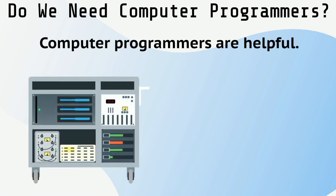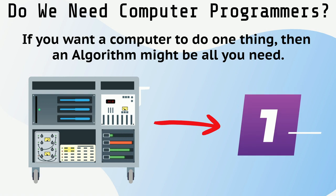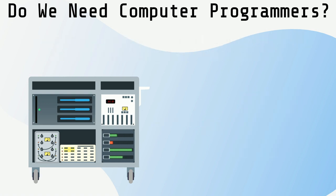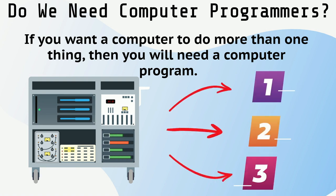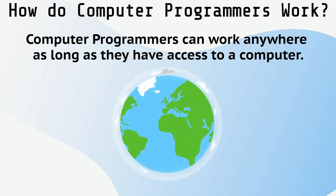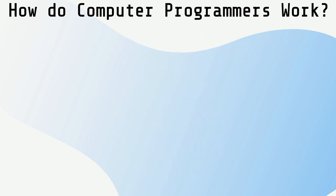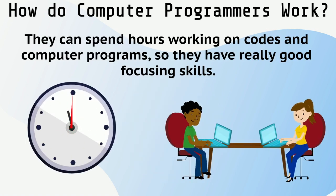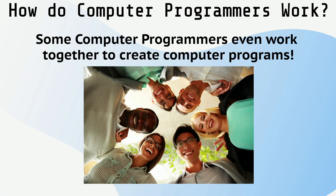Computer programmers are very helpful. If you want a computer to do one thing, then an algorithm might be all you need. If you want a computer to do more than one thing, then you will need a computer program. Computer programmers can work anywhere, as long as they have access to a computer. They can spend hours working on codes and computer programs, so they have really good focusing skills. Some computer programmers even work together to create computer programs.